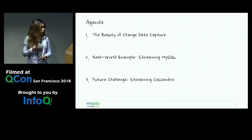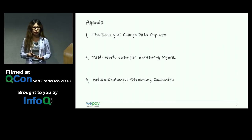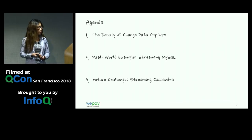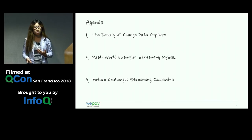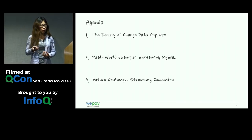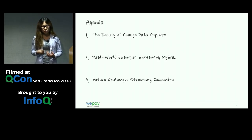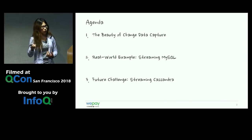The talk is broken down into three sections. First, we'll go over what our previous ETL process looked like and the pain points. We'll also introduce change data capture, the mechanism we use to stream data from our database. Next, we'll look at a real-world example of streaming data from MySQL into our data warehouse. Finally, we'll look at some ongoing work streaming Cassandra into BigQuery, our data warehouse.